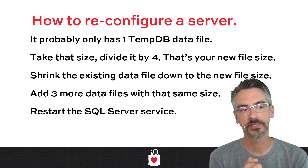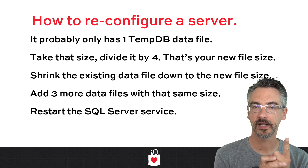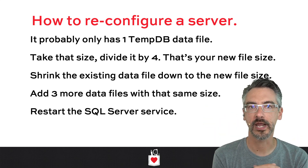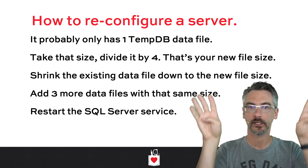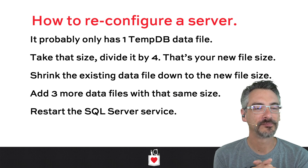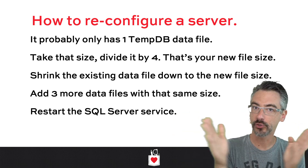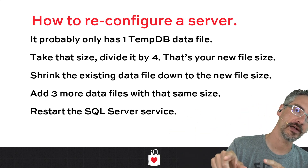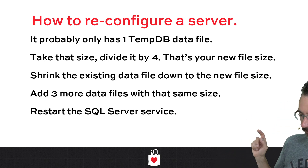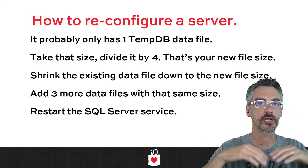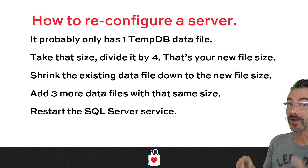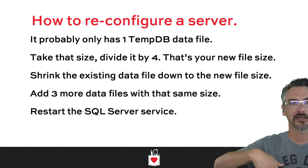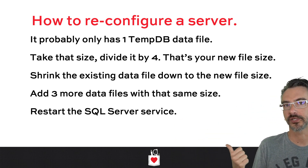So how do you reconfigure an existing SQL Server? It probably only has one TempDB data file today. What you do is look at the size of that file and divide it by four - assuming you're going to use four data files; divide by eight if you use eight. Then shrink the existing data file down to that target size, add three more equally sized files, and then restart the SQL Server service. Restarting the service guarantees that SQL Server is going to use all of those files equally. You don't have to restart right away, but you'll get equal TempDB utilization across those PFS and SGAM pages after you restart.